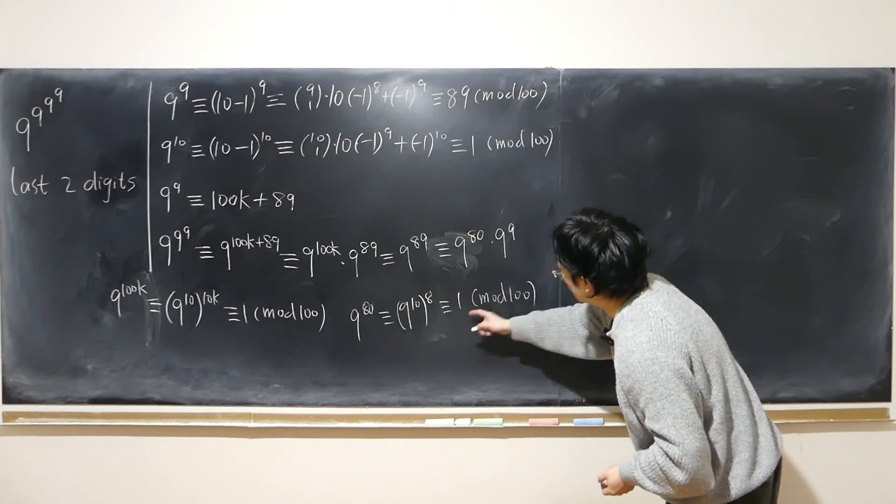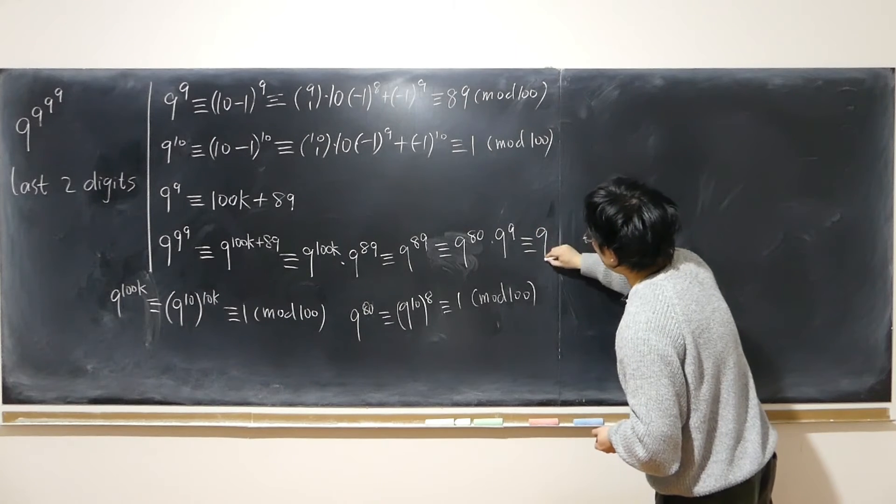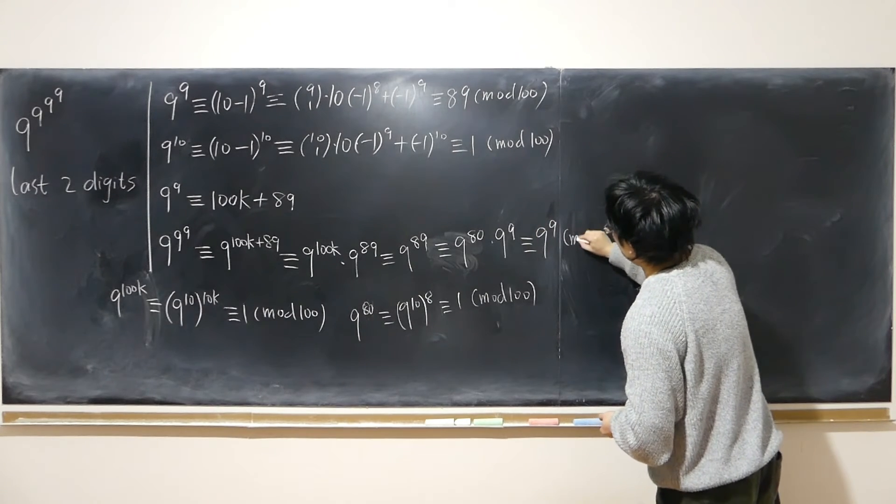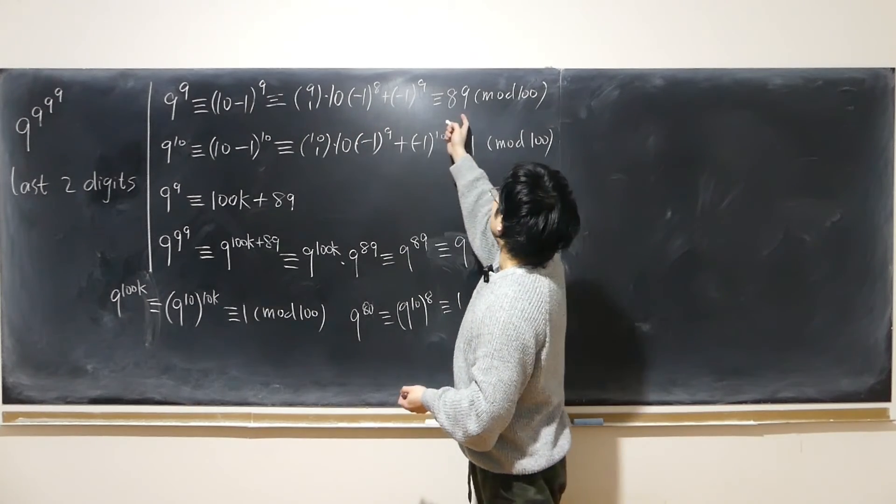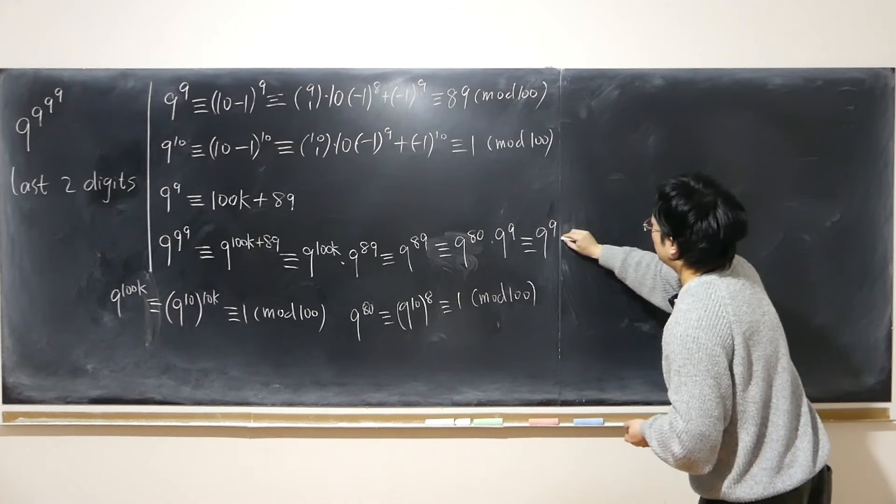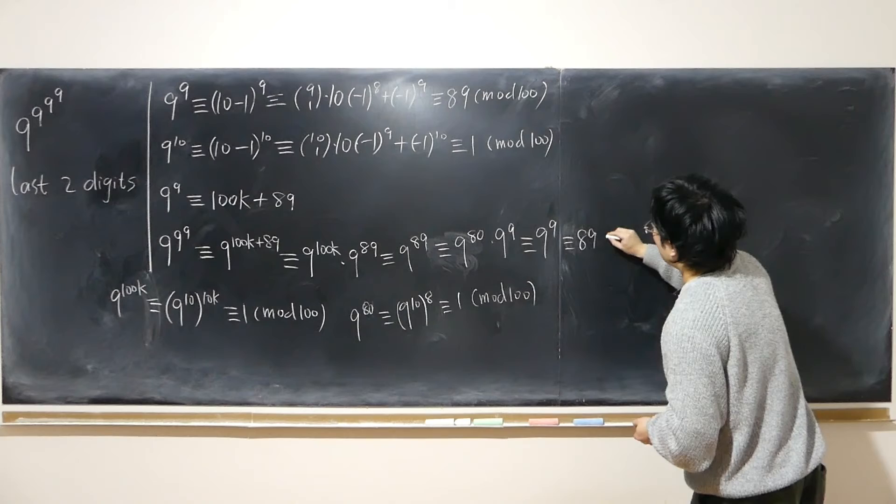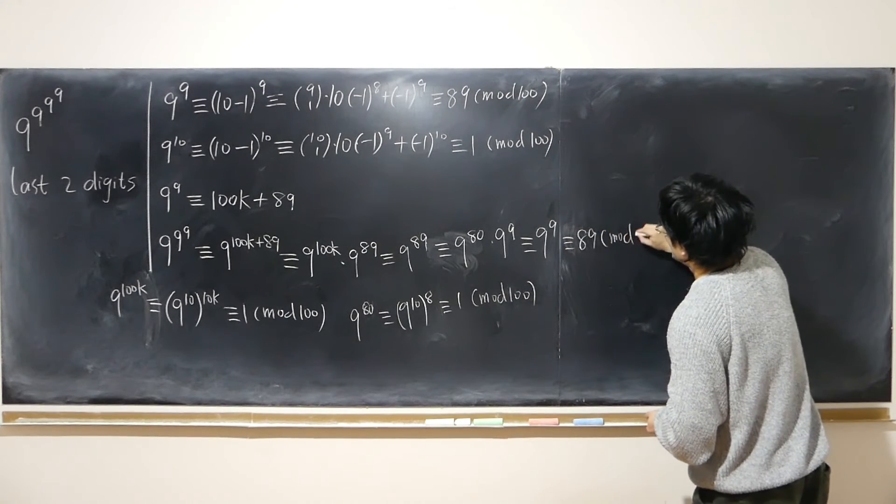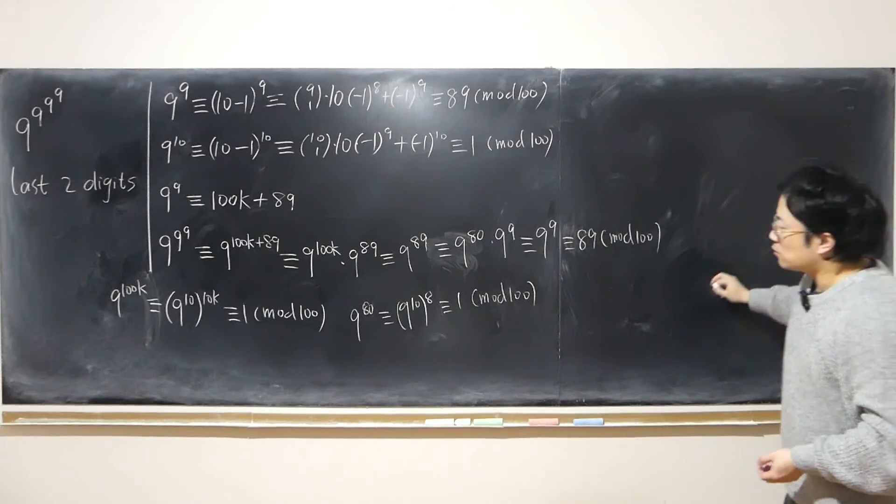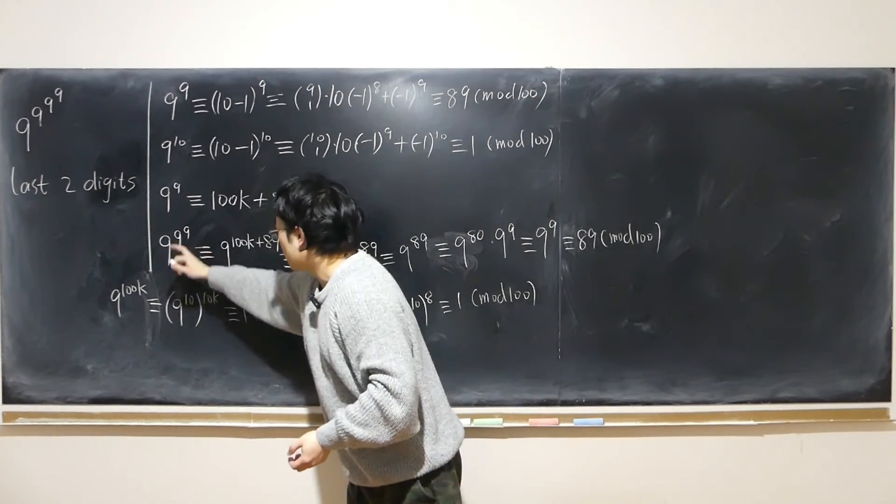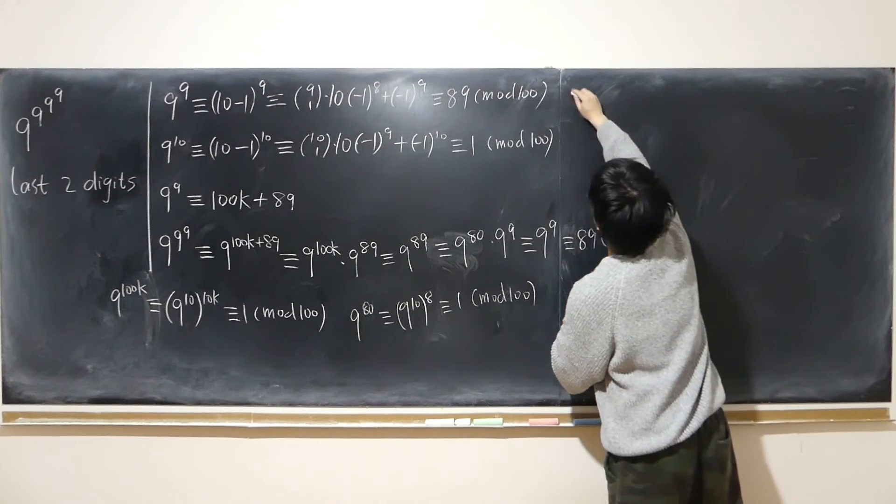So again this can be replaced by 1, so this is essentially 9^9 mod 100. But 9^9 already has a remainder of 89. 9^89 congruent to 89 as I worked out previously, mod 100. So this will be useful. Triple 9, triple 9 is congruent to 89. Let's remember that.